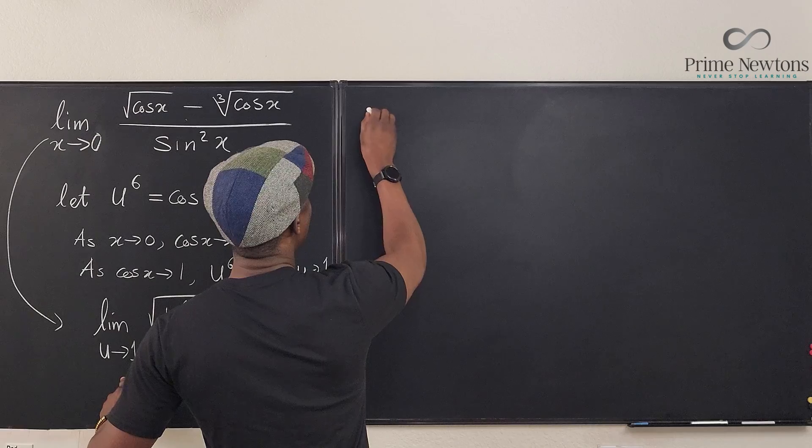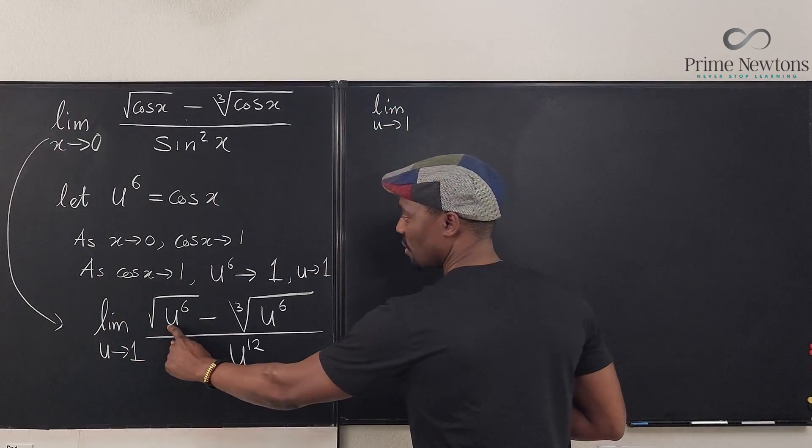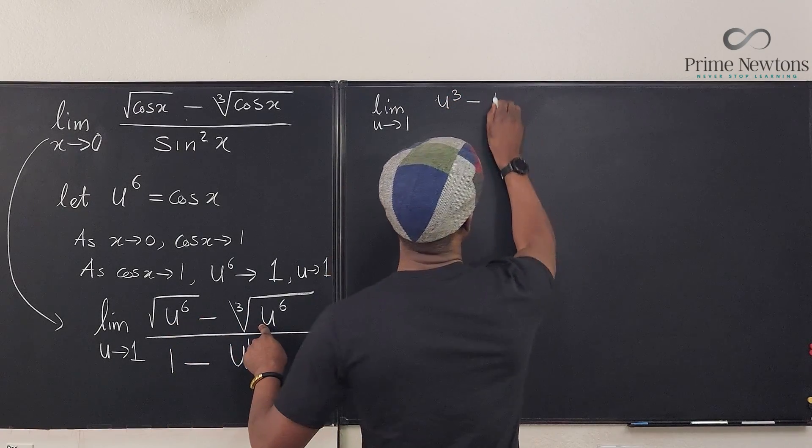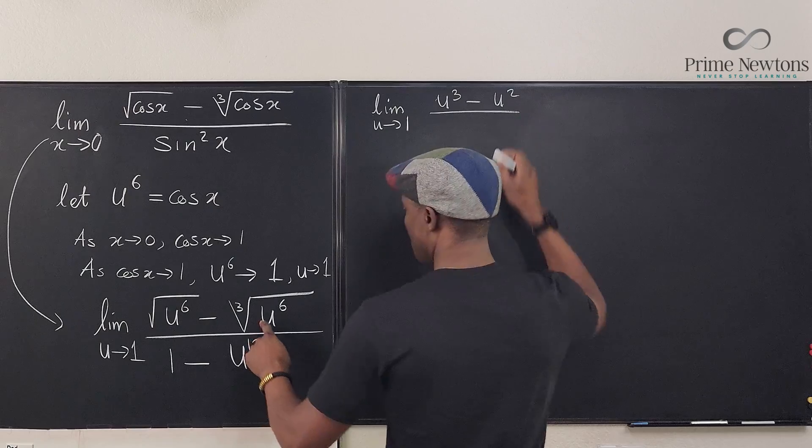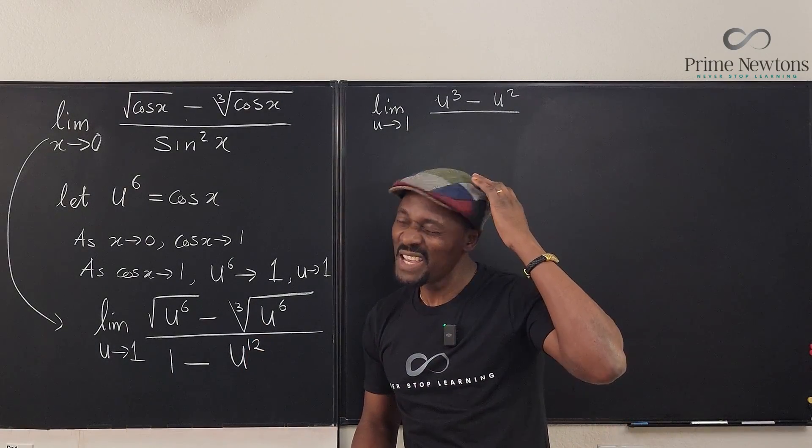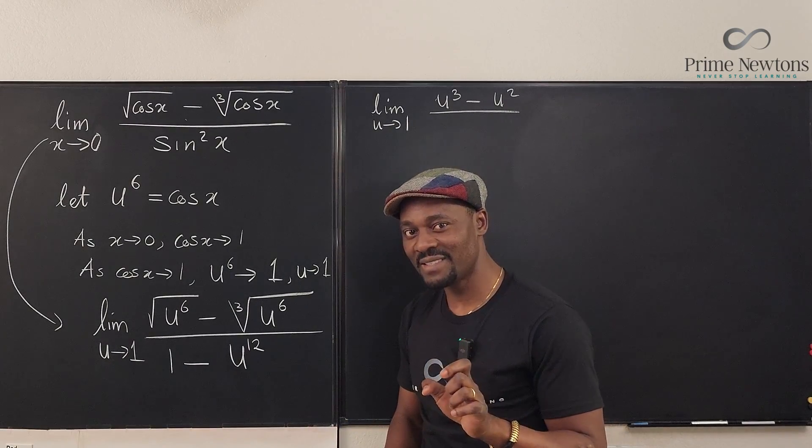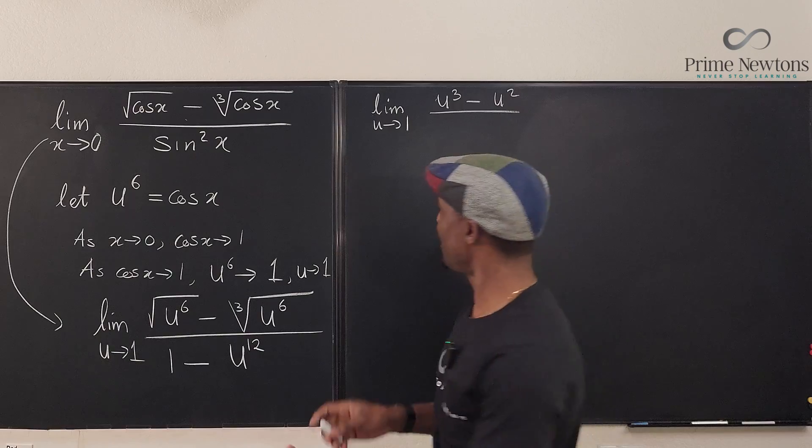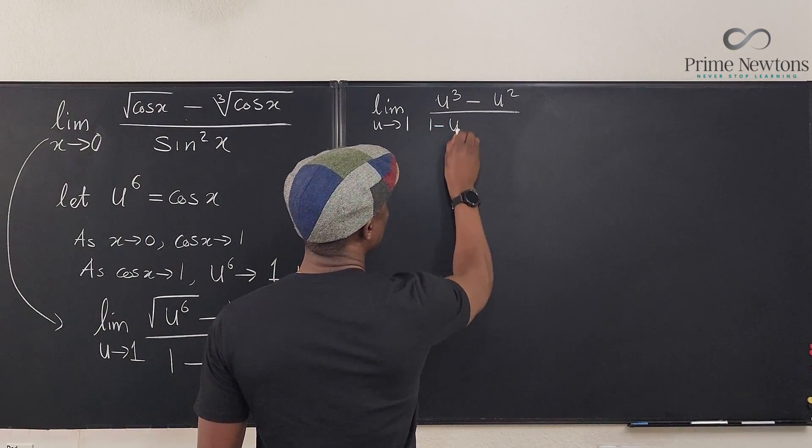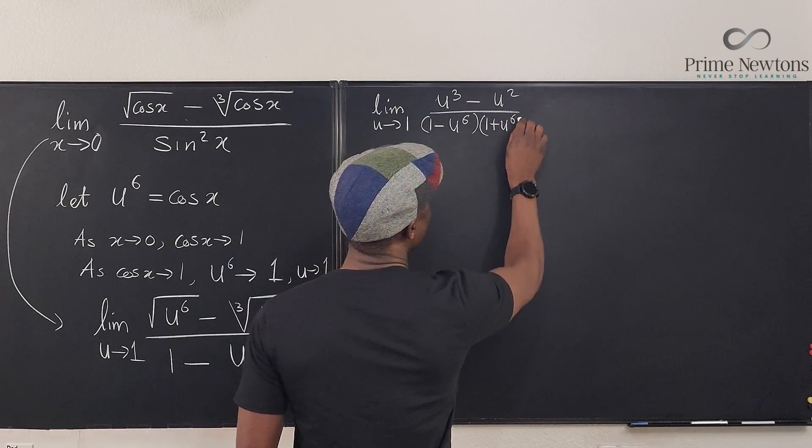So we're going to say we have the limit as u goes to one of, well, it was the square root of this is going to be u cubed minus this is going to be u squared. And in the bottom I have one minus u to the 12, but one minus u to the 12 is the difference of two squares, right? So I'm going to write it as one minus u to the sixth times one plus u to the sixth.